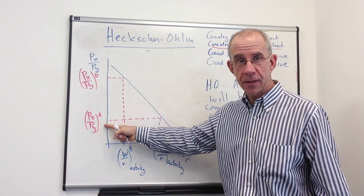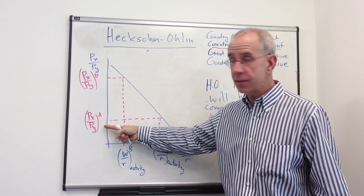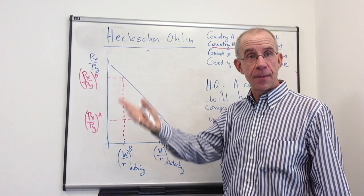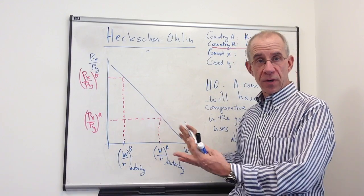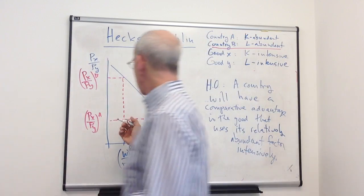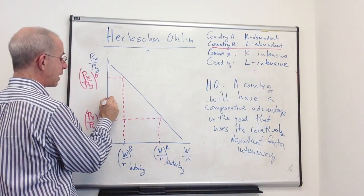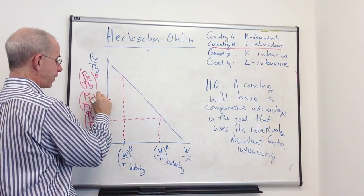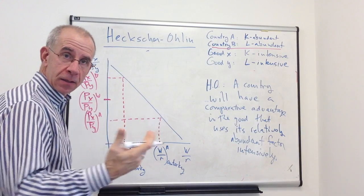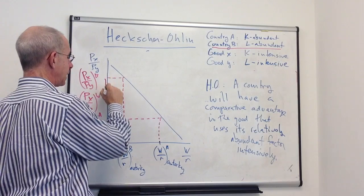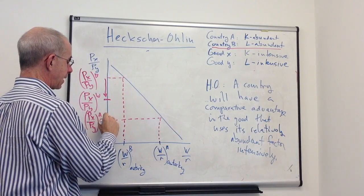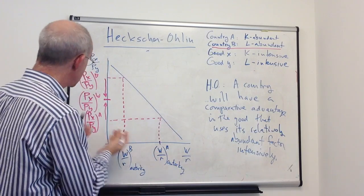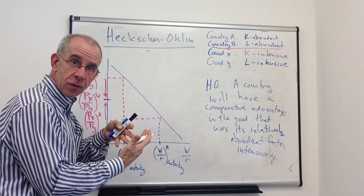X is going to be cheap in country A, the capital abundant country. The capital intensive good is going to be expensive in the labor abundant country, and there are reasons to trade with each other. And so, we've talked about this a number of times, but let me focus again on how the coming together of the prices in trade is going to affect the wage-rental ratio within this Heckscher-Ohlin framework. So again, the prices are going to come together because they're starting to trade with each other.